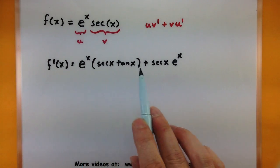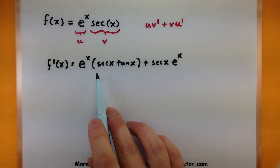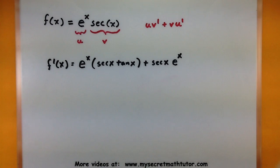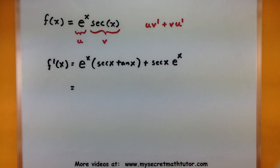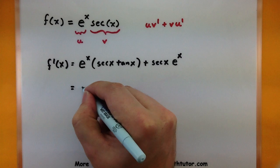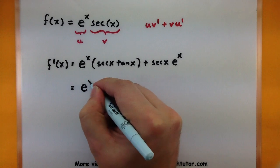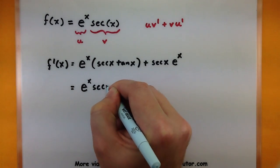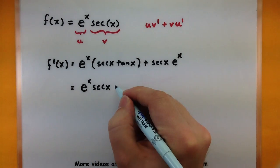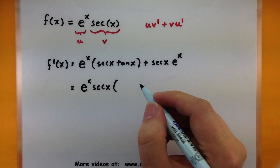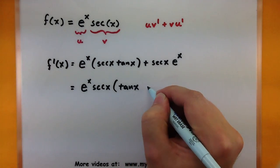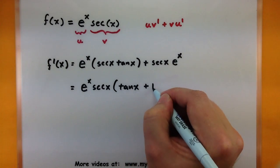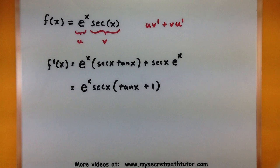Both of these pieces have an e to the x and both also have a secant, so I might as well write this as e to the x times secant of x, all multiplied by tangent of x plus one. And then this derivative is done as well.